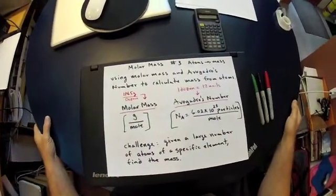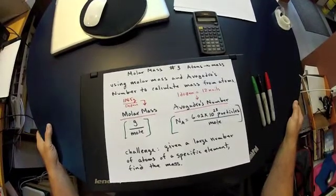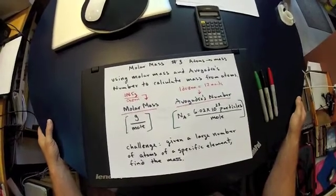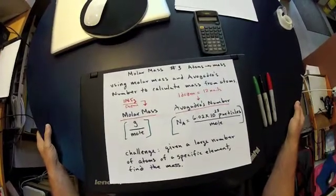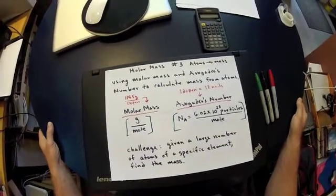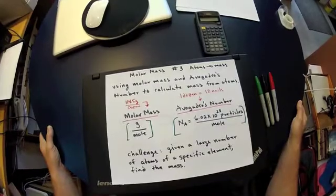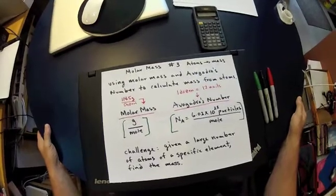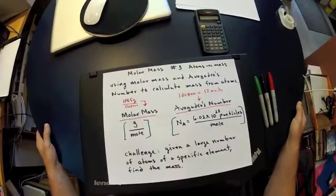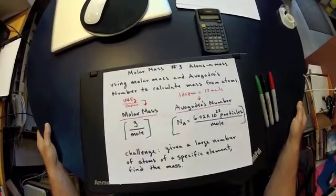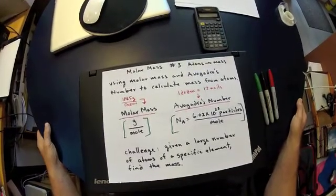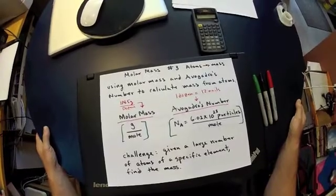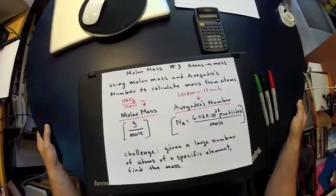Welcome back. This is molar mass number three, the third video in the series that began with a discussion about the basic definition of molar mass related to the mass of a dozen nails. The second video covered starting with the mass of a particular atom, calculating the total number of atoms possible using molar mass and Avogadro's number — the concept that one mole is equal to 6.02 times 10 to the 23rd atoms.